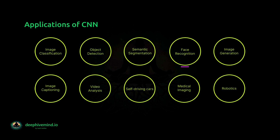CNNs can be used for face recognition tasks, where the goal is to identify and verify individuals based on their facial features. CNNs can be used for image generation tasks, where the goal is to generate new images based on a given input. CNNs can be used for image captioning tasks, where the goal is to generate a textual description of an image. CNNs can also be used for video analysis tasks, such as object tracking, activity recognition, and scene understanding.